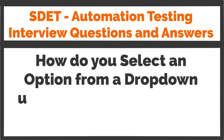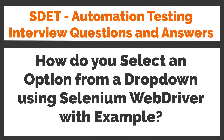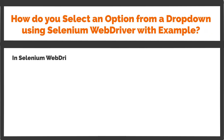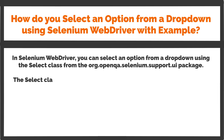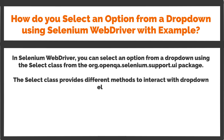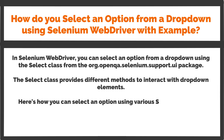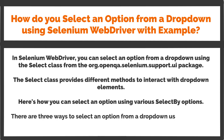How do you select an option from a drop-down using Selenium WebDriver? In Selenium WebDriver, you can select an option from a drop-down using the Select class from the org.openqa.selenium.support.ui package. The Select class provides different methods to interact with drop-down elements. There are three ways to select an option from a drop-down using Selenium WebDriver.